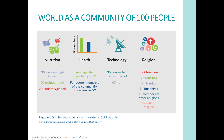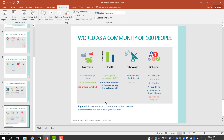On nutrition, 30% have enough to eat, 50% are malnourished, and 20% are undernourished. Average life expectancy is 72, but for poor communities it's 52. On technology, 35% are connected to the internet and 65% are not — which is an amazing number — and even those connected face issues with lack of Wi-Fi or high-speed internet. On religion, 32% are Christians and 16% have no religion, and that number is rising. That covers the introductory chapter.